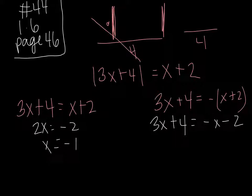Add x to both sides because we have negative x, which would be 4x. Take away 4, which would give me negative 6. And then simplify that fraction when I divide to get negative 3 halves.